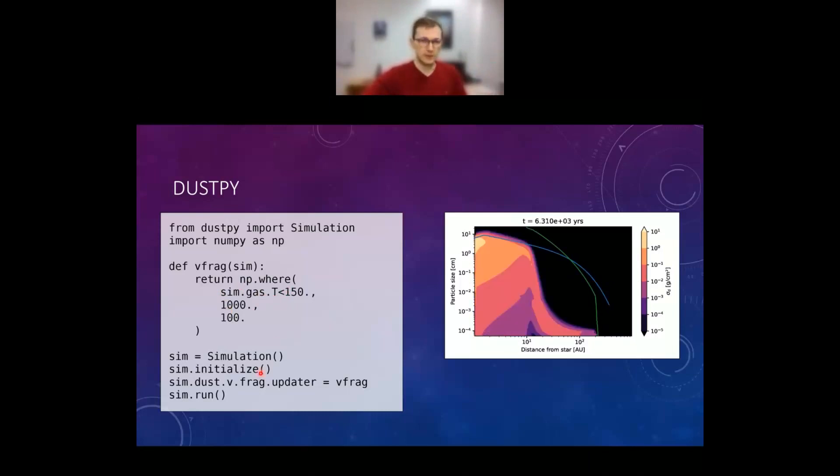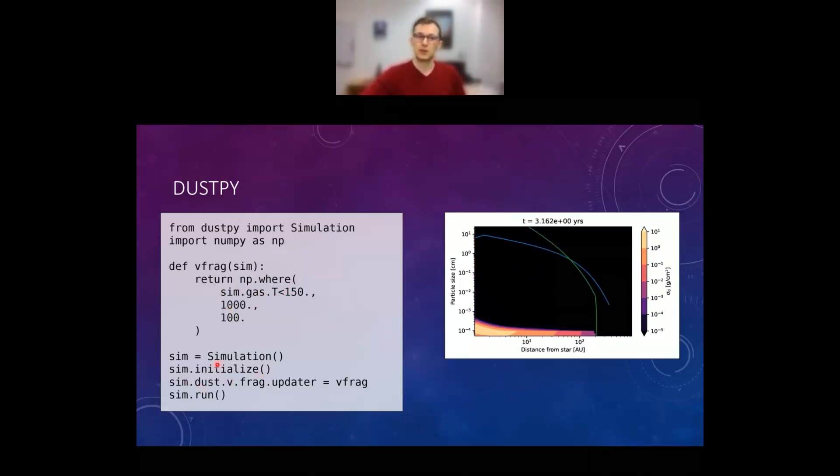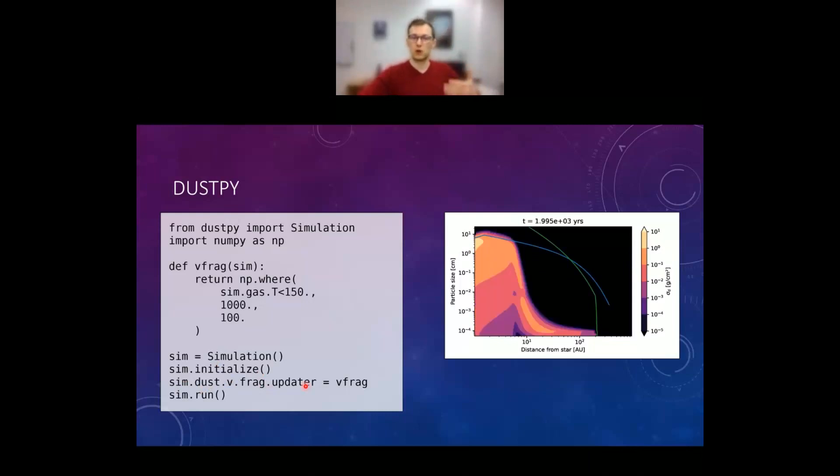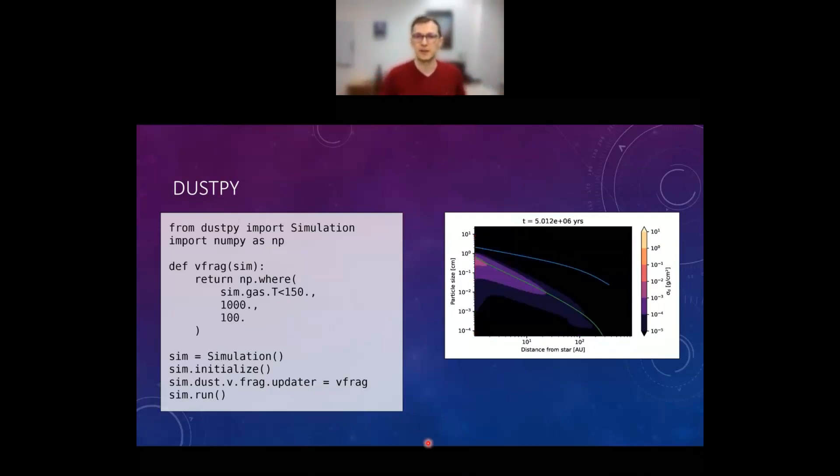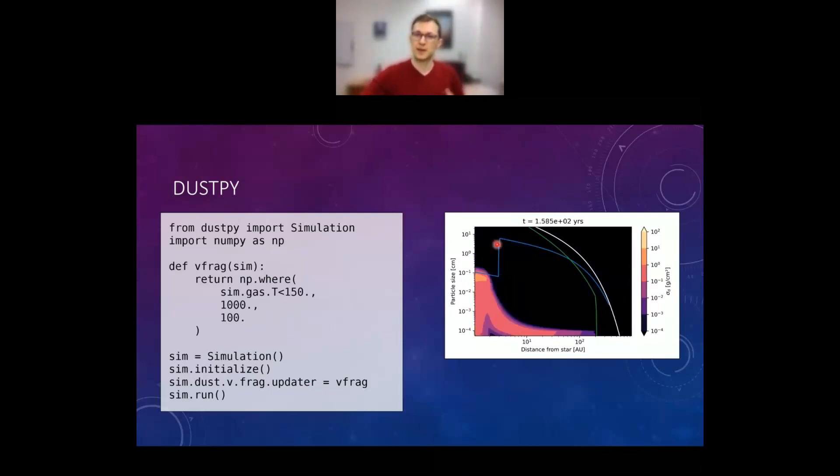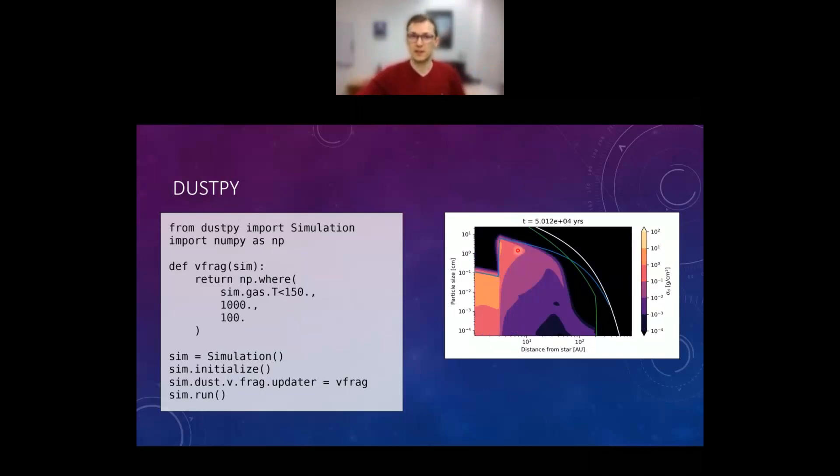Now we have this function that returns the fragmentation velocity. Now we just have to tell DustPy to use this one instead of the standard function. And how we do this right here. So after the initialization step here, we just go to the field where the fragmentation velocity is stored. And this has an attribute, the updater. And we just now load our defined function into this updater. And now DustPy knows, okay, from now on, I use this function to calculate the fragmentation velocity instead of the standard function. And if we run this, then we get a model like you see here on the right side. You see this jump in fragmentation velocity here indicated by the fragmentation barrier, where outside of the water ice line, you have larger particles because they are more sticky than inside. So it was like now seven lines of code that you had to add and you have an entirely new model. So that's the philosophy of DustPy that everything is super easy to modify.